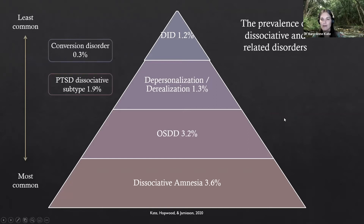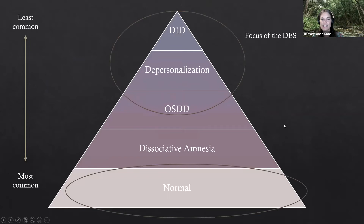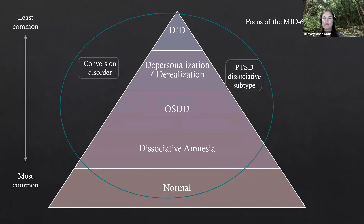The DES focuses on and kind of misses that middle range of dissociation — picking up normal or elevated depersonalization, but often people don't score high enough to show pathological dissociation even if they really have a lot of it. The MID-60 is much broader and captures questions across all of these dissociative dimensions. The MID-60 is not the be-all and end-all — the full version has validity scales built in, which is a really clever instrument. But clients often find 218 questions too lengthy, especially dissociative clients.